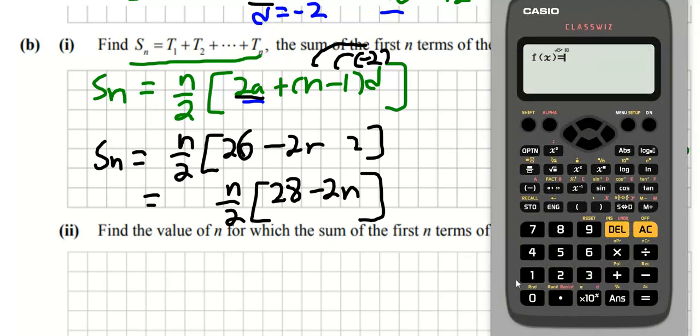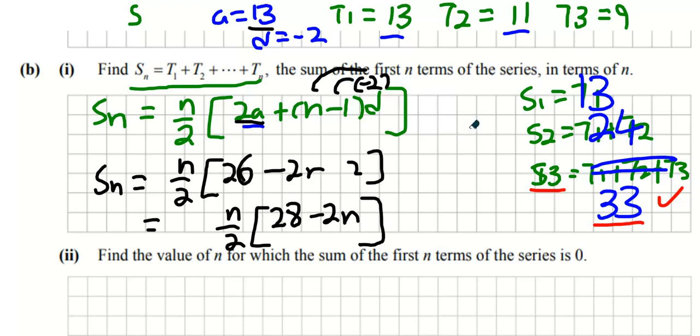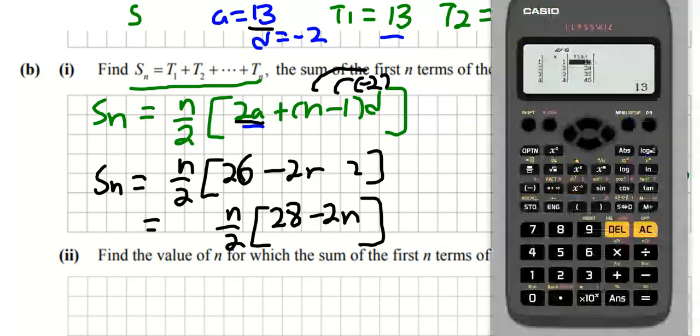I'll use a table function, instead of n I'm going to use x, so it's going to be x over 2 into 28 minus 2x. Start at one and end at 20 and take a step of one. Now what you can see is that S1 is 13, we thought that would happen because we said that S1 is T1 which is 13. We can see that S2 was 24 as we predicted.